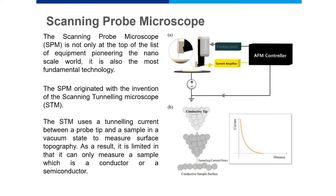SPM originated with the invention of the scanning tunneling microscope, or STM. STM uses a tunneling current between the probe and the sample in a vacuum state to measure surface topography. The limitation of STM is that it can only be used with conducting or semiconducting samples. There was therefore a need to invent an instrument that could also measure the topography of non-conducting materials, and thus atomic force microscopy was born.